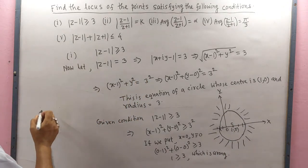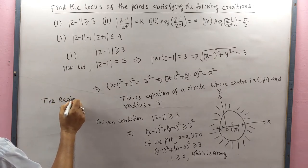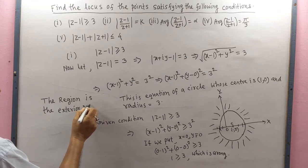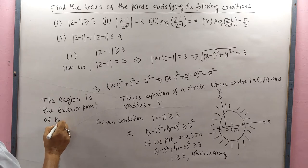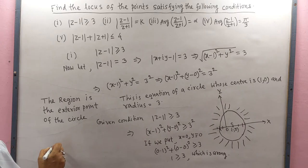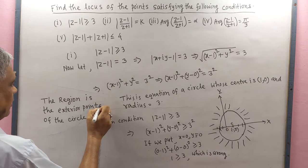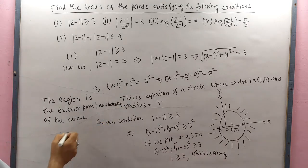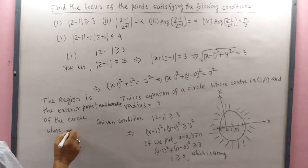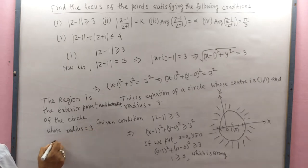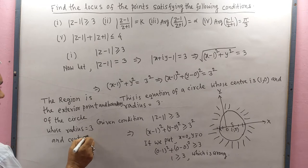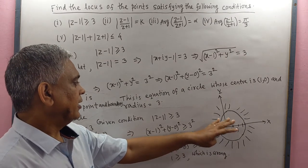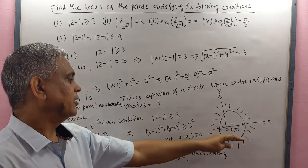Since the condition includes 'equal to', the boundary also satisfies the condition. Therefore the region is the exterior and boundary of the circle whose radius equals 3 and center is (1, 0). The locus of the points is the exterior of the circle and its boundary.